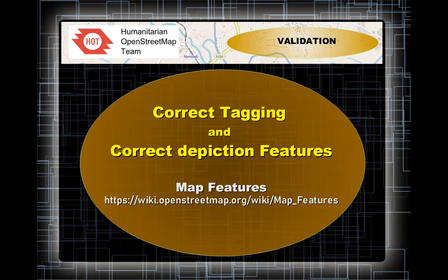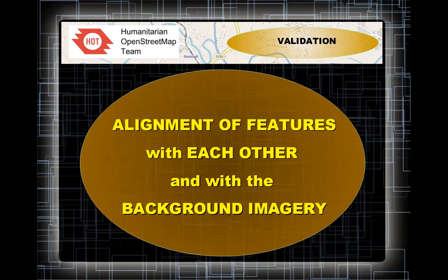If you have a look in the chat, I will try to drop in the URLs for each item I'm talking about so that you can connect to them or copy them onto a document or memo. Now, what is it that we are going to be looking for when we are validating?